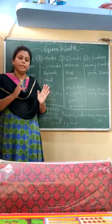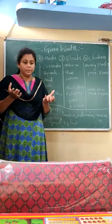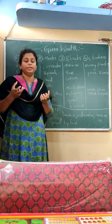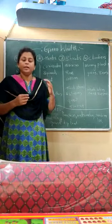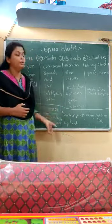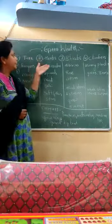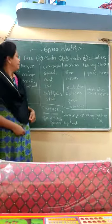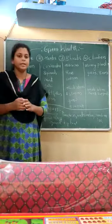Depending upon their nature and characteristics - the thickness of their stem, their strength, and how they grow - we have divided them into five different types of plants: trees, herbs, shrubs, climbers, and creepers.